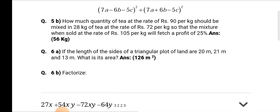Question 5b: How much quantity of tea at the rate of rupees 90 per kg should mix in 28 kg of tea at the rate of rupees 72 per kg, so that the mixture when sold at the rate of rupees 105 per kg will face a profit of 25 percent? Answer is 56 kg. First find out and then match the given answer.